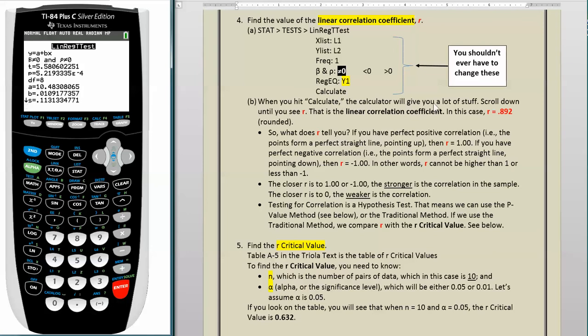What does it say here? When you hit calculate, the calculator will give you a lot of stuff. Scroll down until you see R. So let's scroll down, and there you see R .89197.